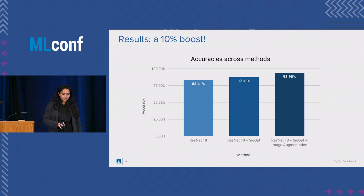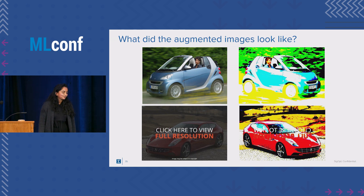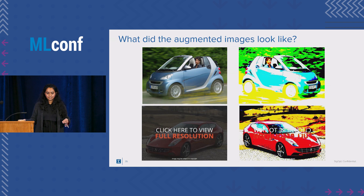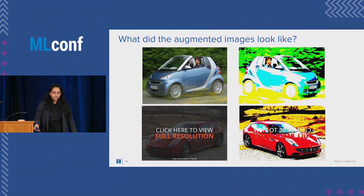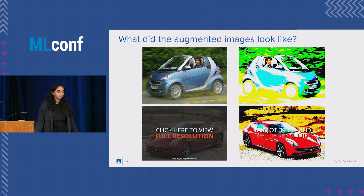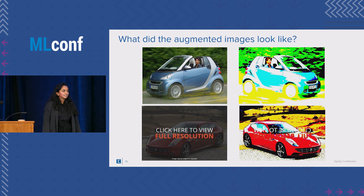What did the augmented images look like? We see original images transformed into hyper-vibrant versions where contrast and saturation are taken to extremes. Boundaries in the image become more visible. Interestingly, the parameters bring objects in the background to the foreground, as seen in one example where the car is in the background of a banner. We don't fully know why this is useful to the model — that's future work in model interpretability and robustness.